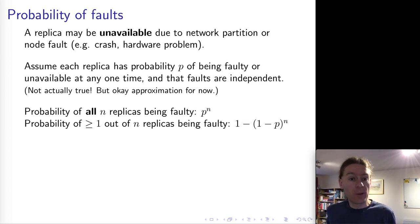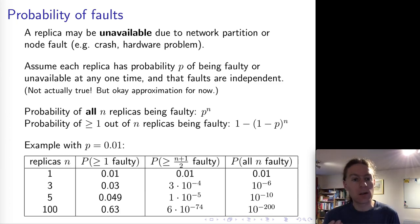So now if p is the probability of any one node being faulty, that means the probability of all n replicas being faulty is p to the n. And we can work out what is the probability of one or more being faulty. And we can make a little table.